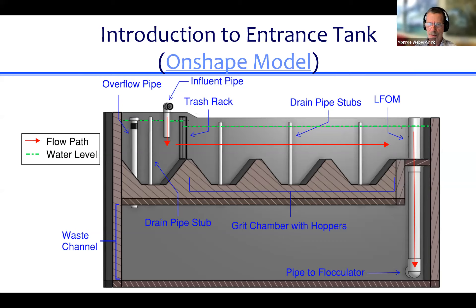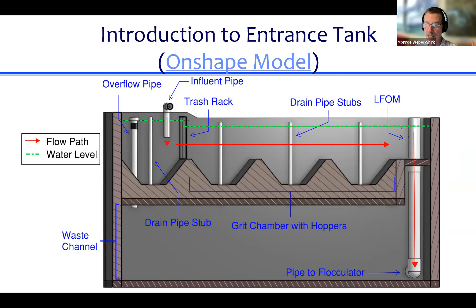There's a common confusion about what sets the flow rate in a plant - inevitably someone thinks the flow rate is based on how much water is in the river, and that if it rains a lot, more water goes through the treatment plant. That's not what happens. There's a valve somewhere in the pipeline delivering water into the plant, and the operators adjust that valve to control how much water comes in. Flow rate through the plant is controlled by a valve, not by how much water is flowing in the stream.